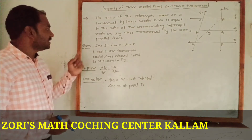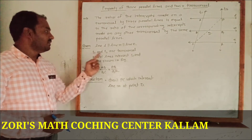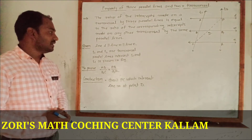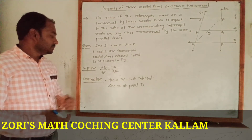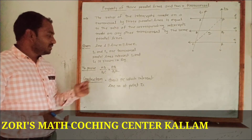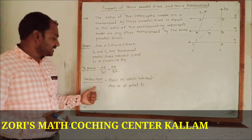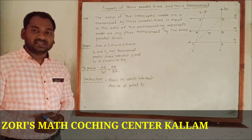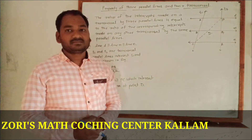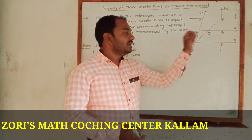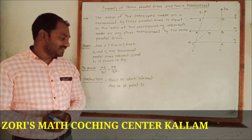In order to prove the property, we have shown that line L is parallel to line M, which is parallel to line N. T1 and T2 are transversals of the parallel lines. The parallel lines intersect T1 and T2 as shown in the figure. To prove AB/BC = PQ/QR. Construction: we have drawn segment PC, which intersects line M at a point D.